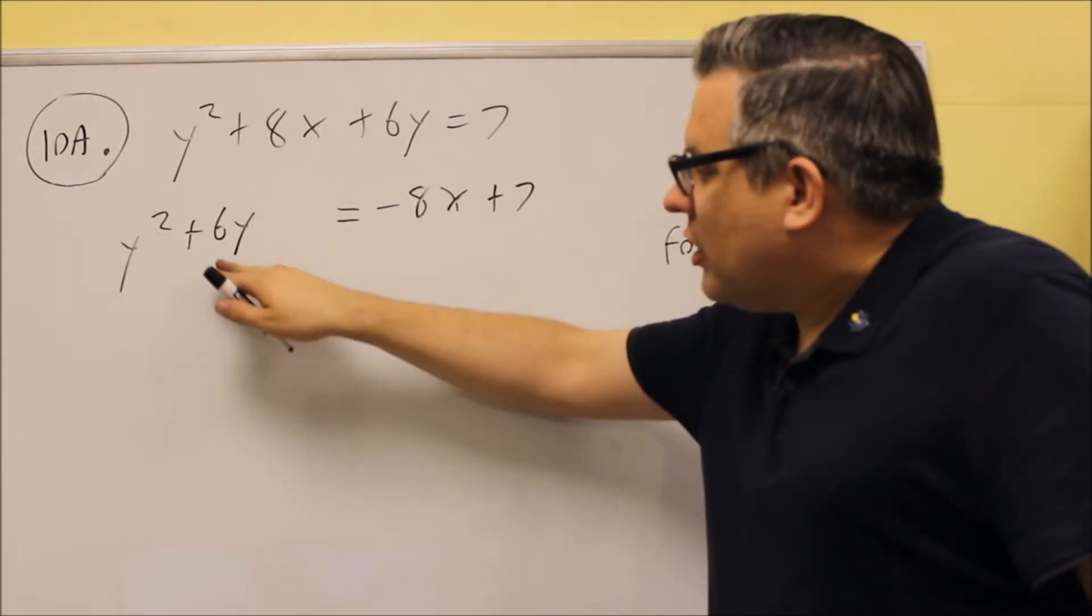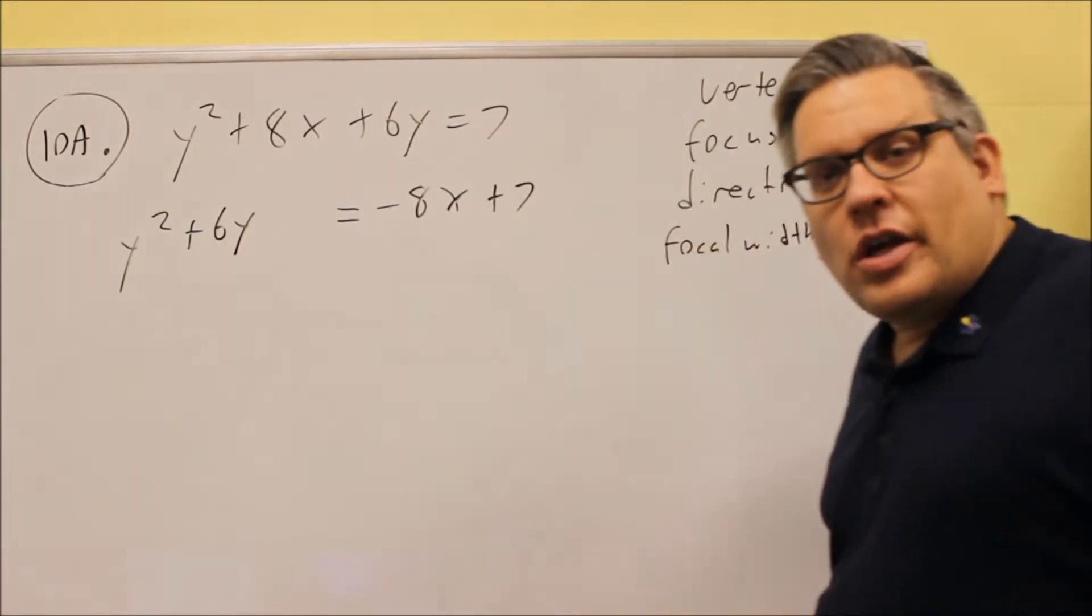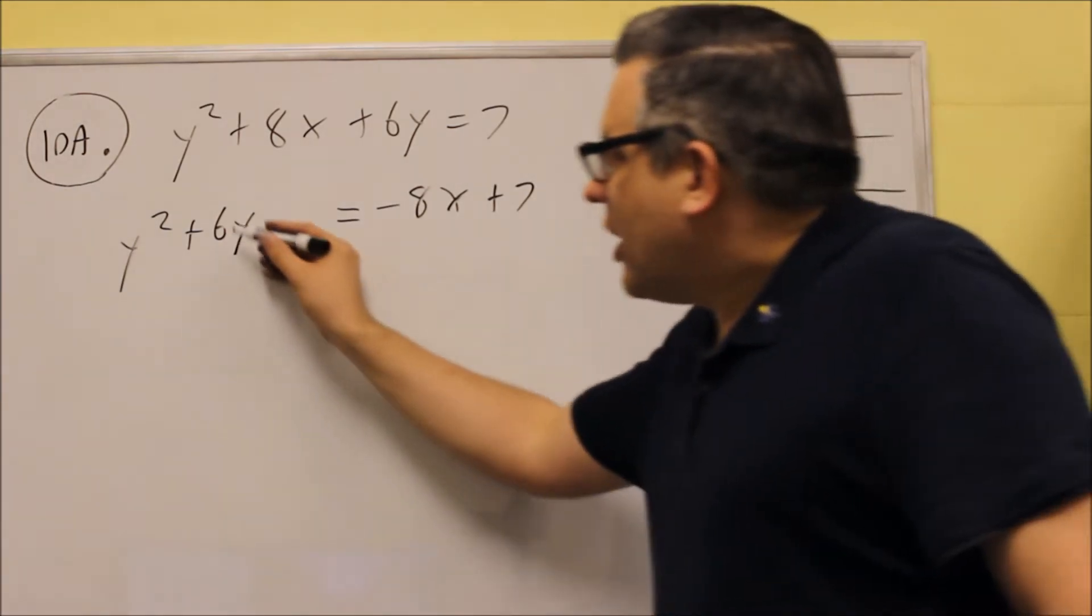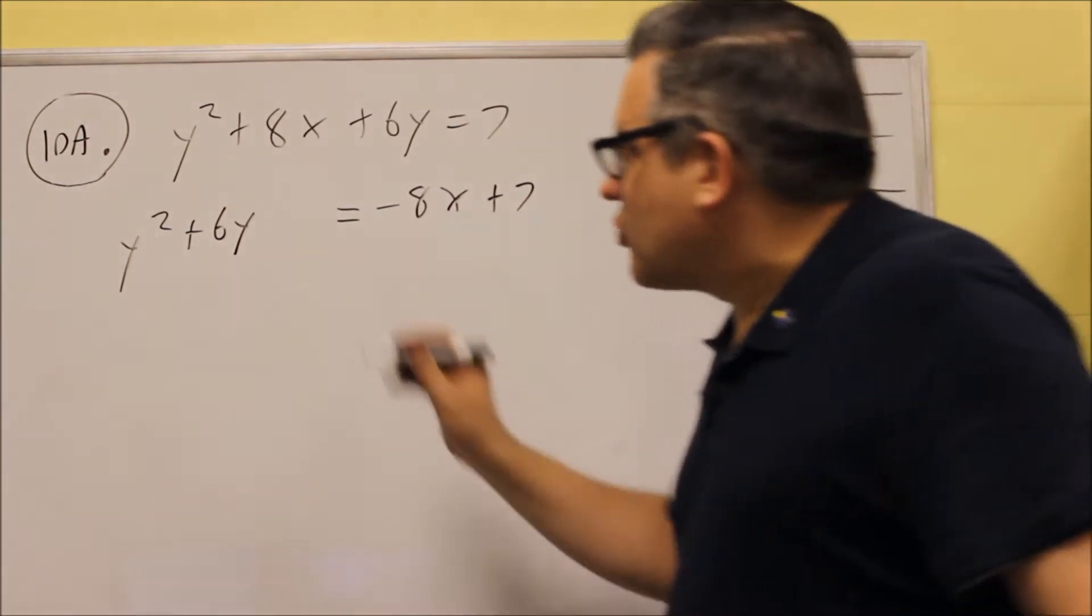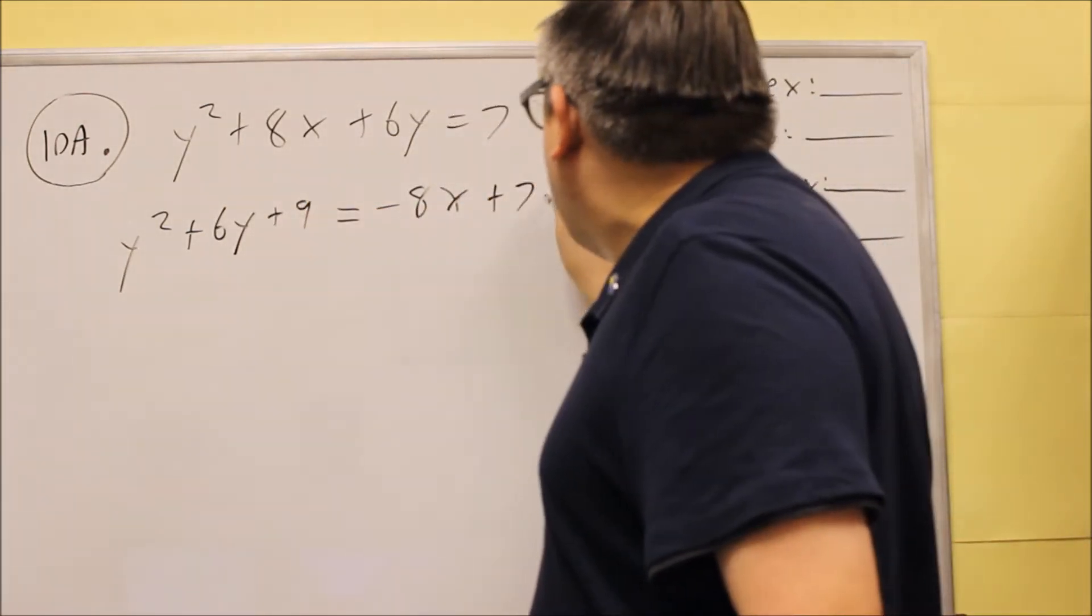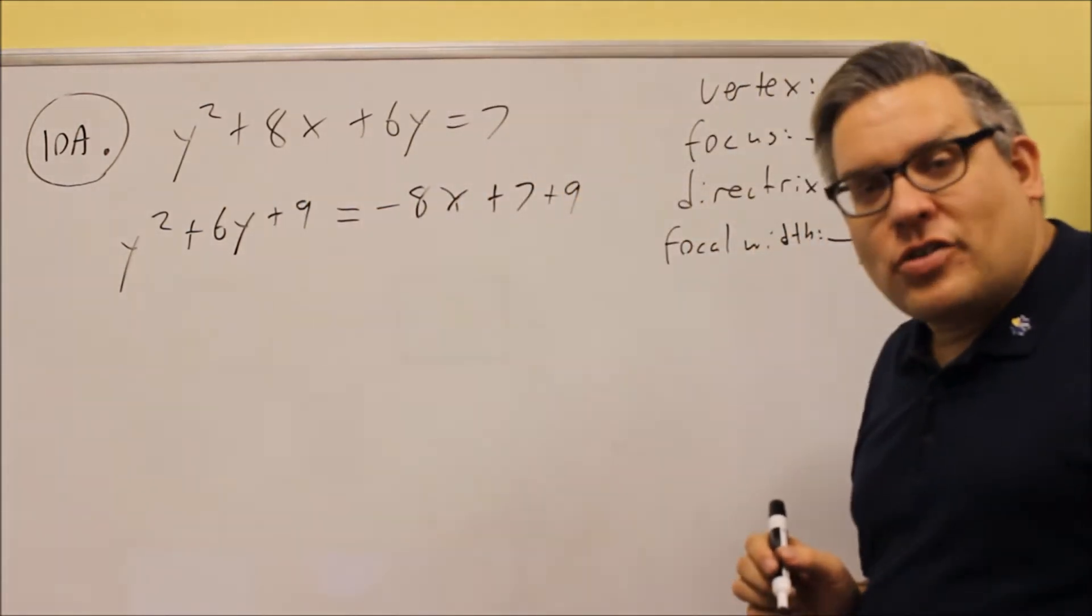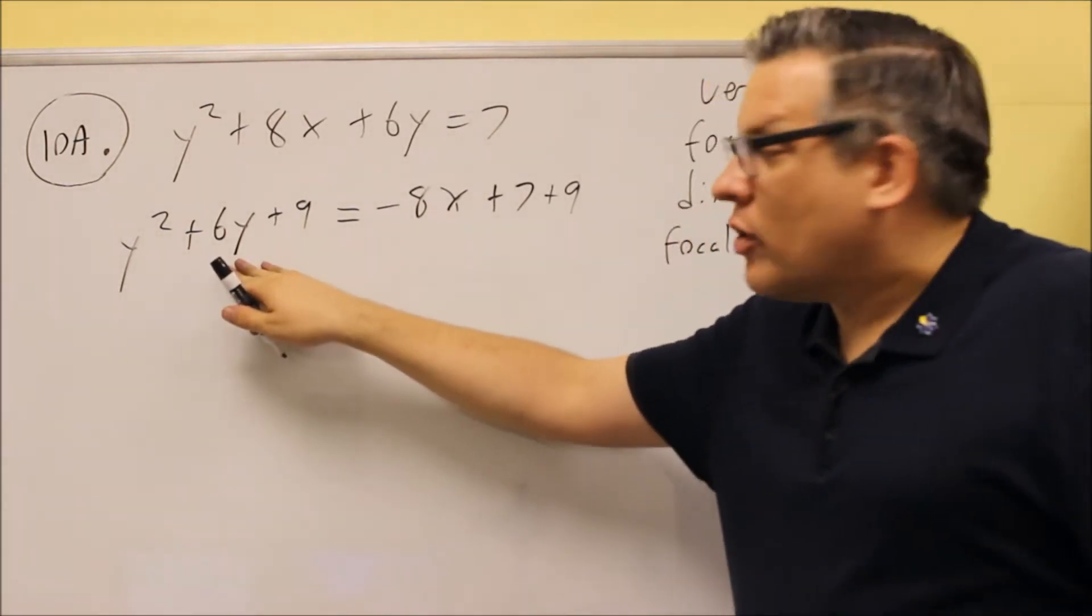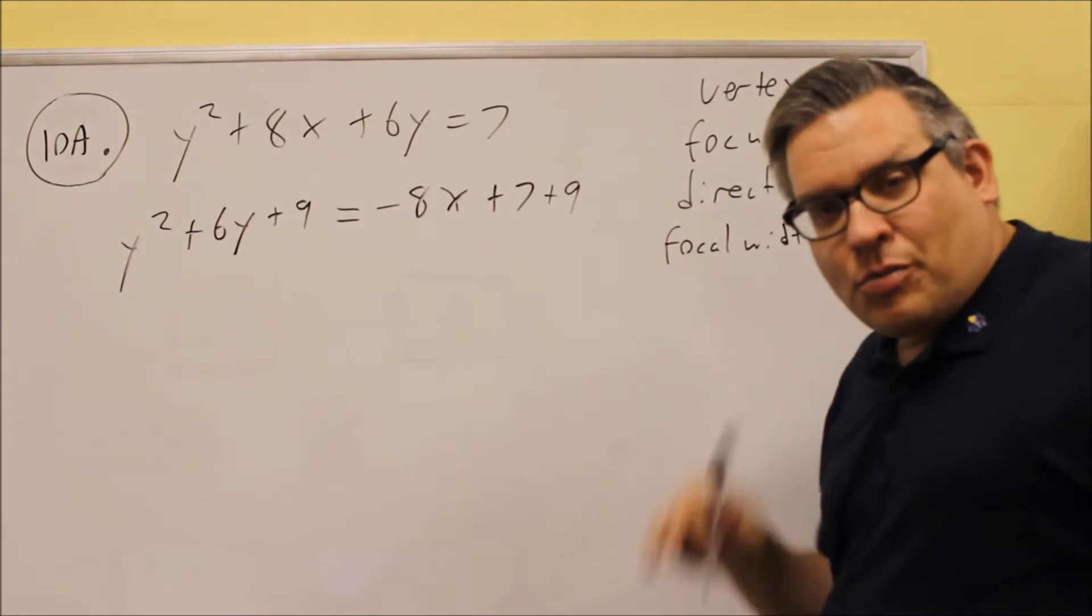We complete the square with the 6, and what we do there is we're going to divide it by 2 and then square it. So divide that by 2 and we get 3. When you square the 3 you get a 9, and you're going to add 9 to both sides of the equation. So once we have it set up there where you have just the two y's on one side, everything else on the other, complete the square steps.